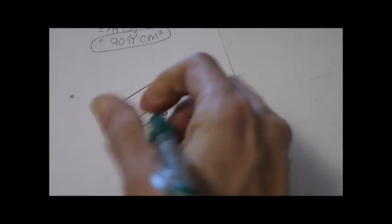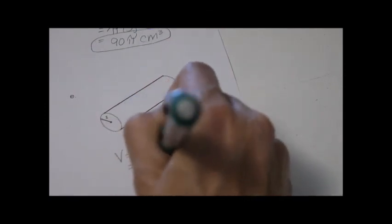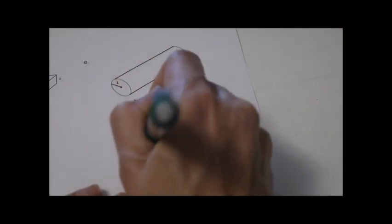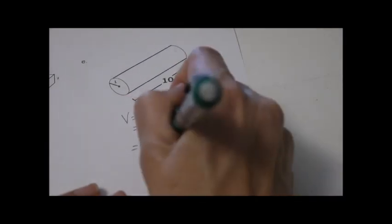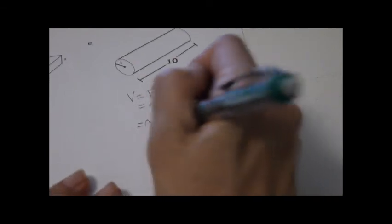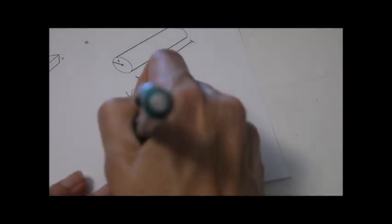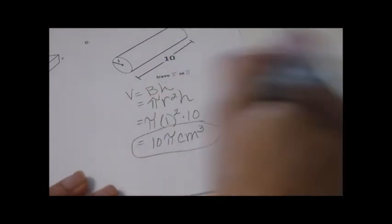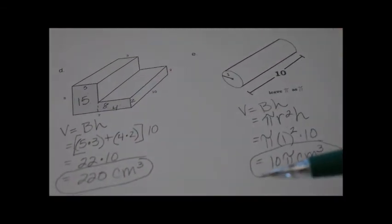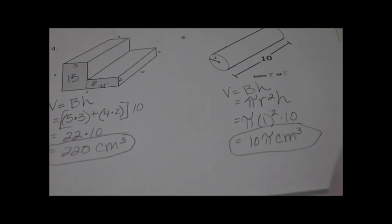Last one is a cylinder. Volume equals area of the base times height — it's a circle, so that's pi r squared times the height. They let us leave pi as pi. The radius is 1 squared times 10, so it's 1 times 1 times 10. Our answer is just 10 pi centimeters cubed. Write the formula, fill in what you know, calculate the answer — and that is it.